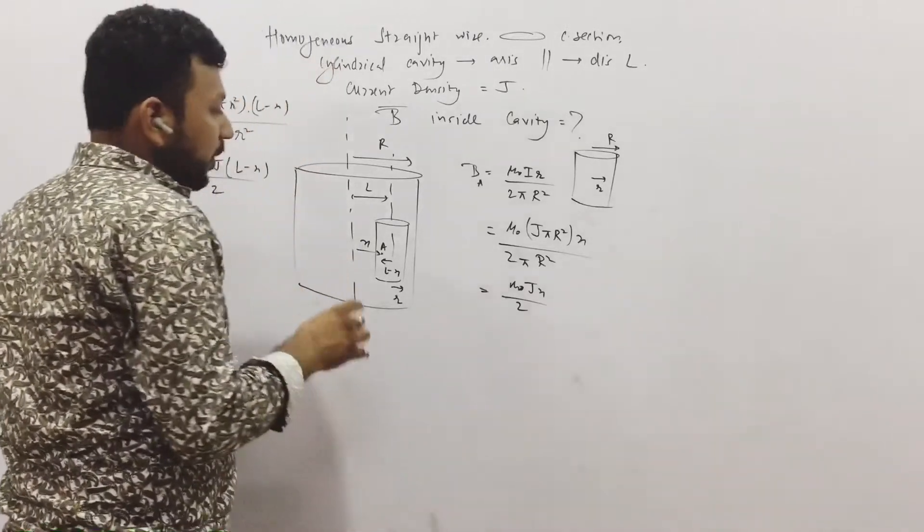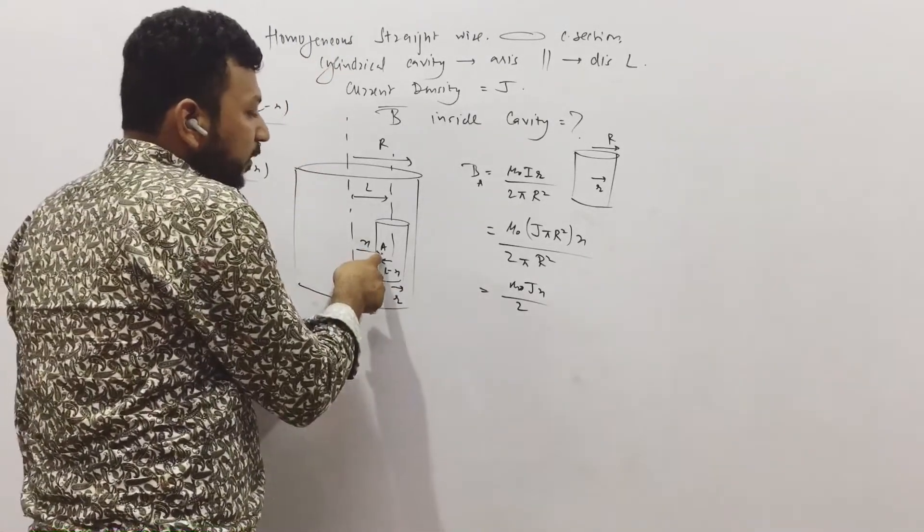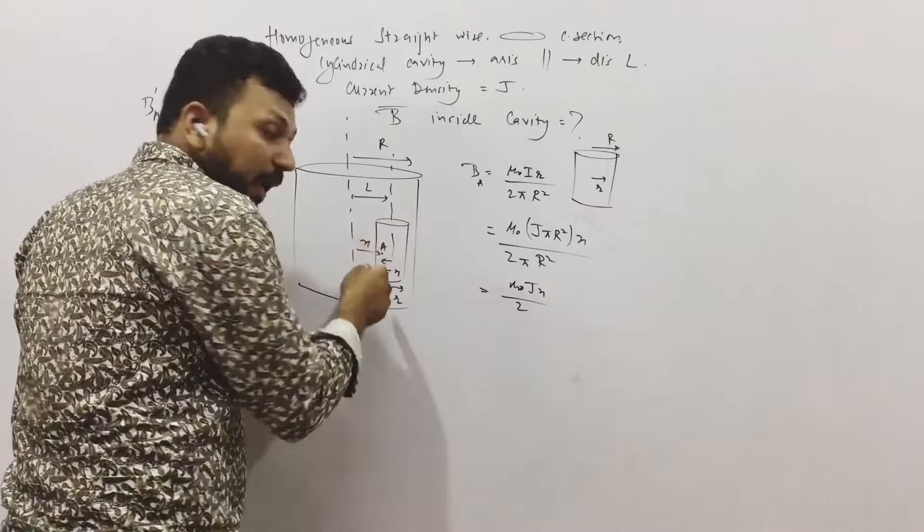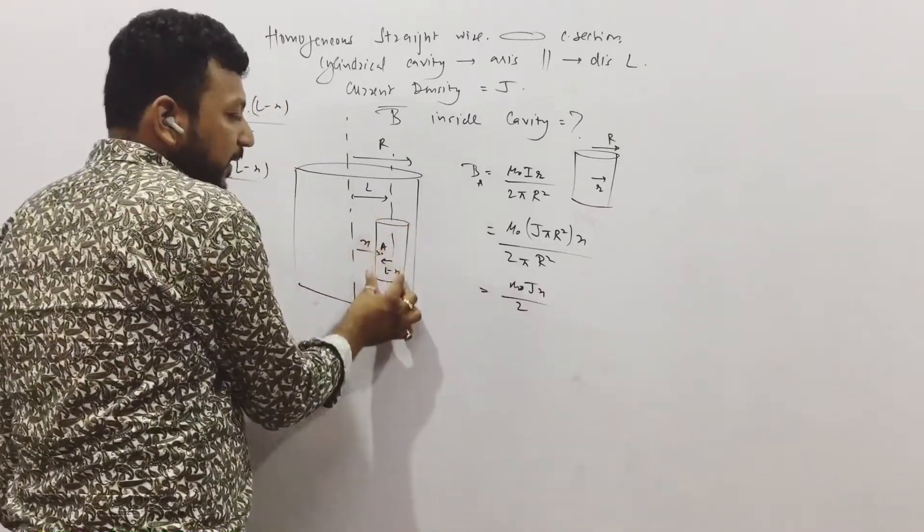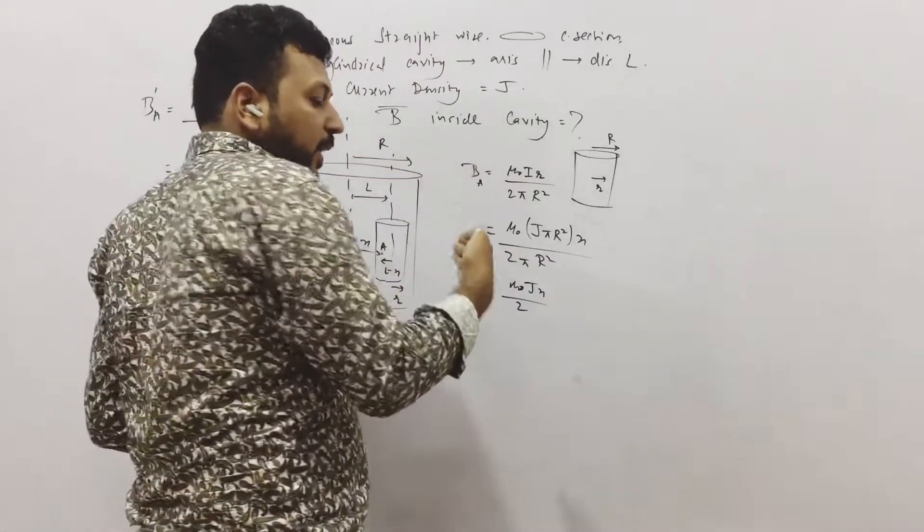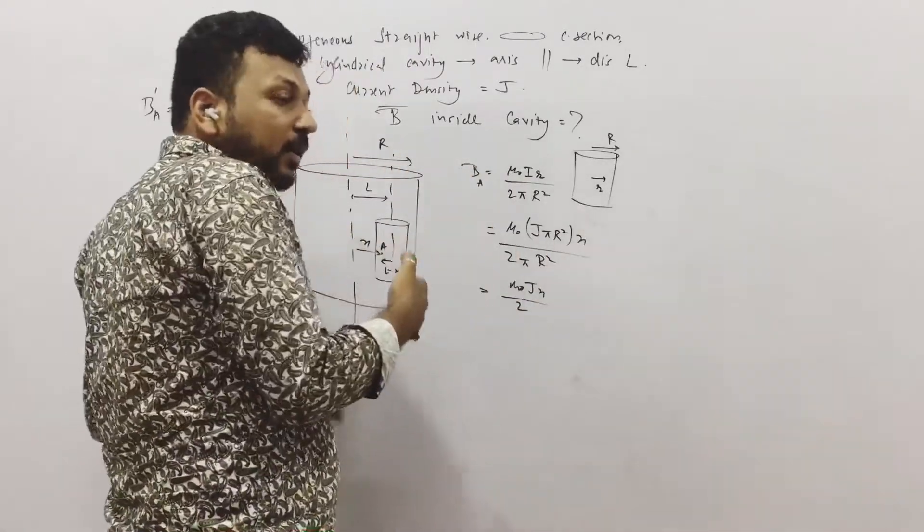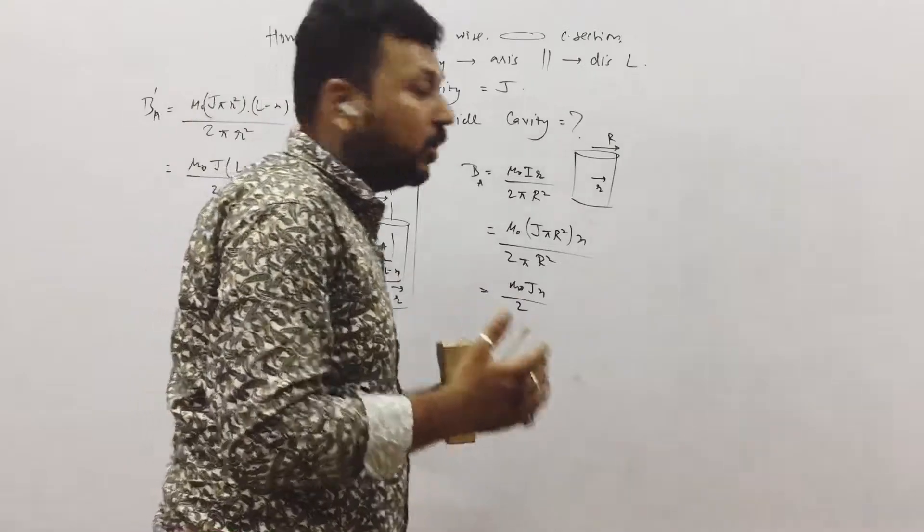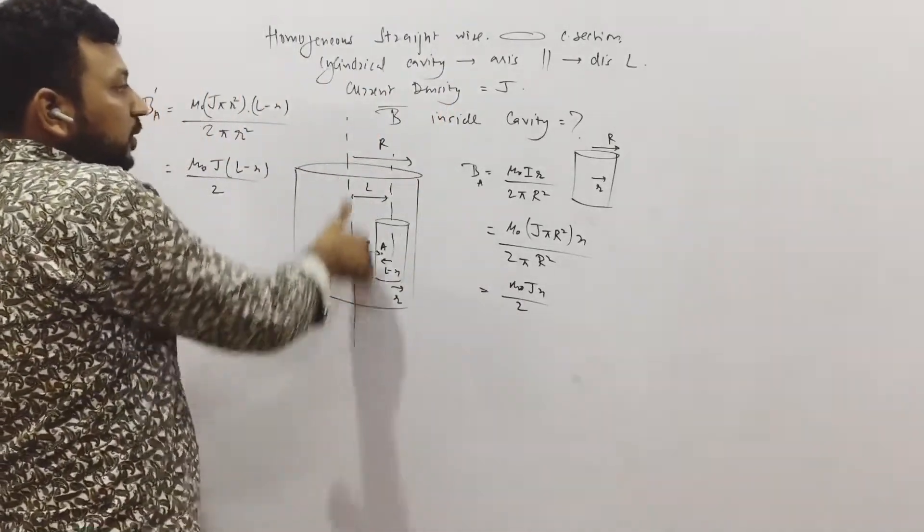Now see, if by chance both the magnetic field due to both of them is inside, then we have to subtract the effect of this. But here it is not the case. Magnetic field due to this current, it is inside.